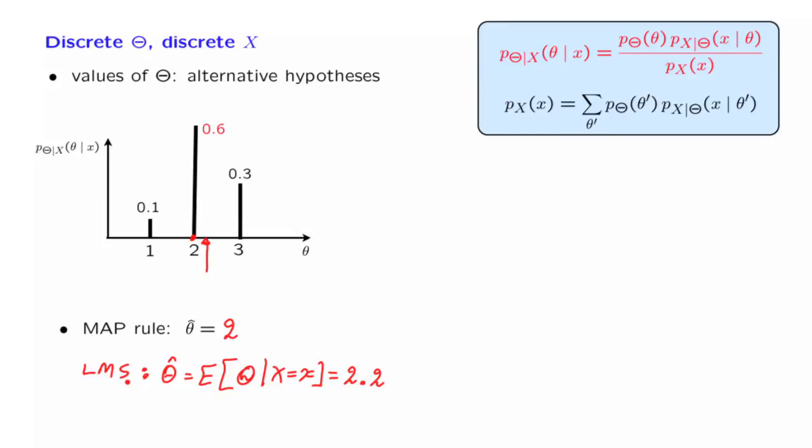Next, we may be interested in how good a certain estimate is. And for the case where we interpret the values of theta as hypotheses, a relevant criterion is the probability of error. In this case, because we already have some data available in our hands, and we're called to make an estimate, what we care about is the conditional probability, given the information that we have, that we're making an error.